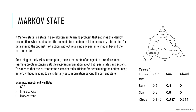The Markov assumption is important in reinforcement learning because it simplifies the problem of estimating the value function or policy, and allows reinforcement learning algorithms to scale to large state spaces. By assuming that the next state depends only on the current state and action, the agent can ignore the previous history of states and actions and focus only on the current state and action when estimating the value or policy function.